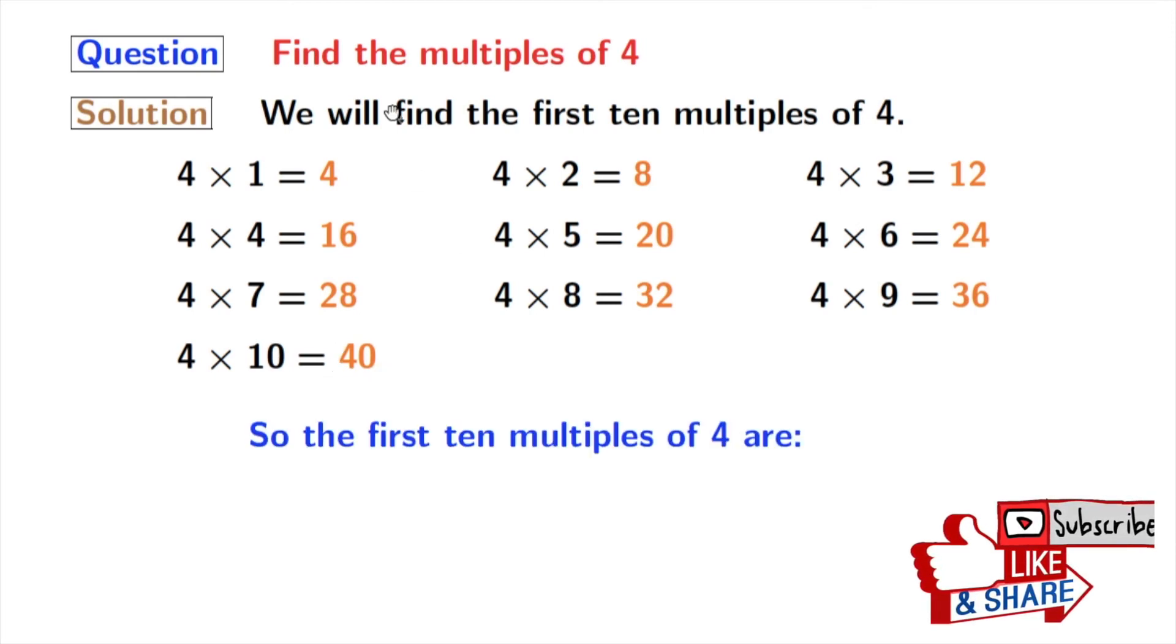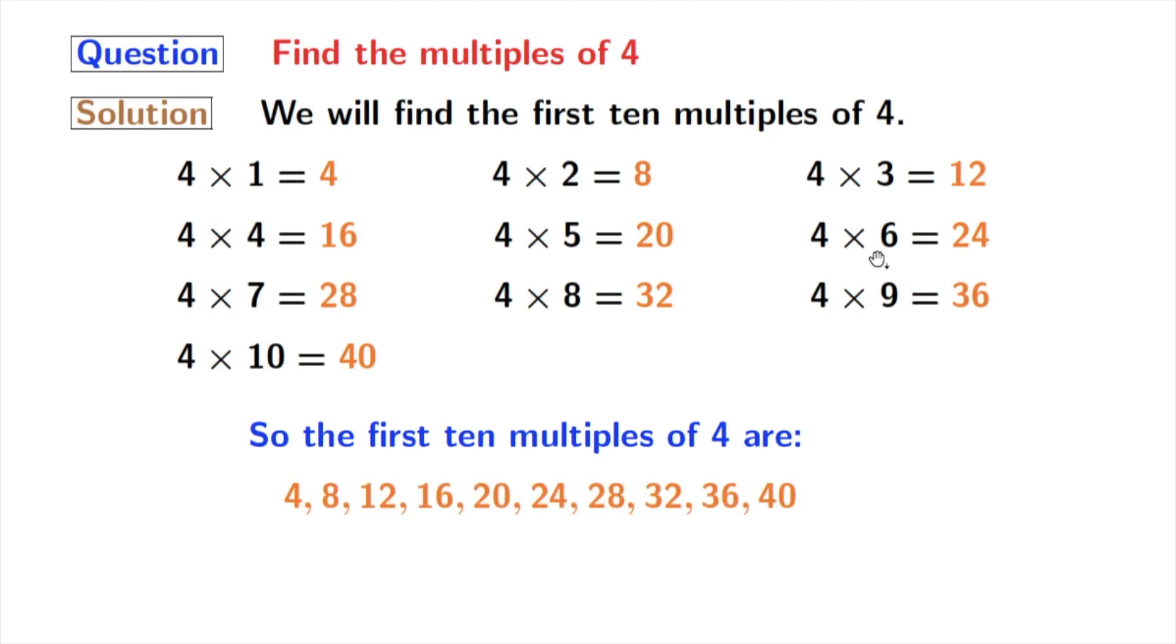So we get the first 10 multiples of 4, which are the orange ones. Those are 4, 8, 12, 16, 20, 24, 28, 32, 36, and 40.